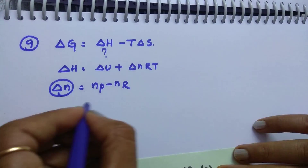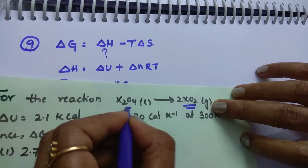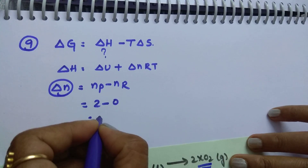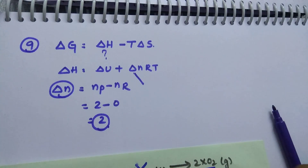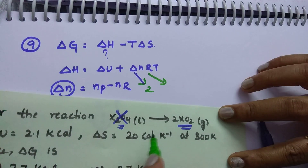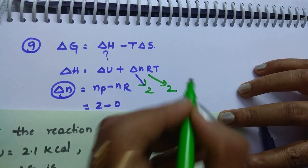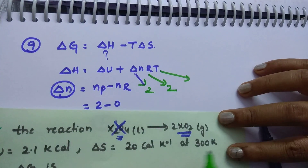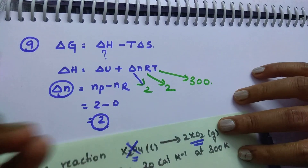Delta n is the change in number of moles of gaseous products minus gaseous reactants. Gaseous products: 2 moles of XO2. Gaseous reactants: X2O4 is a liquid, so zero. Therefore delta n equals 2. R is approximately 1.987 calories, taking it as 2. Temperature given is 300.